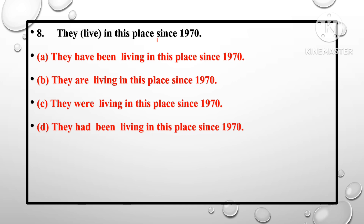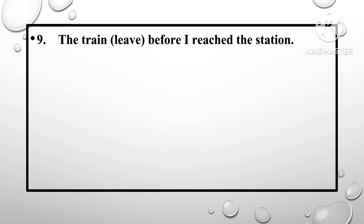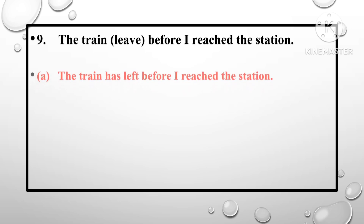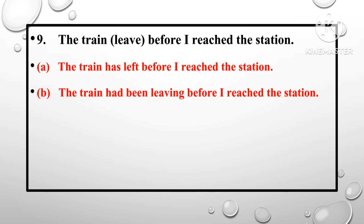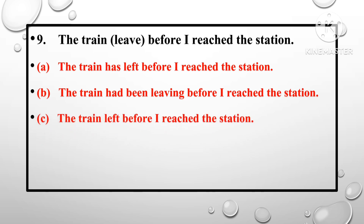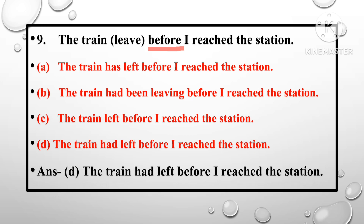Since 1970, the correct answer uses present perfect continuous: 'they have been living in this place since 1970' — Option A is correct. Question number 9: 'The train left before I reach the station.' Options include: has left; had been leaving; left; had left. Since 'before' requires past perfect, Option D — 'the train had left before I reach the station' — is correct.